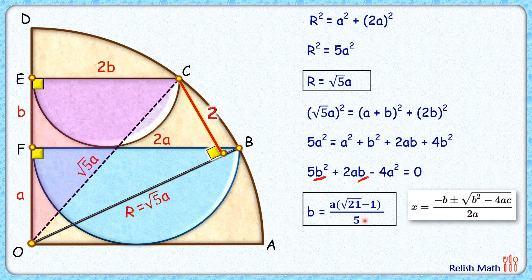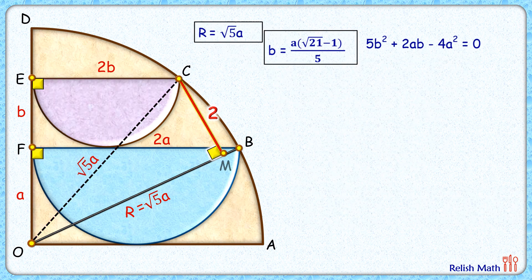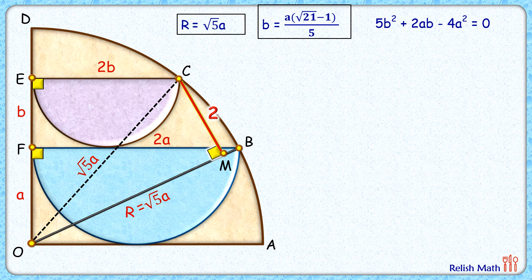For our next step let's save three values: r = √5·a, the value of b = a·(√21−1)/5, and the quadratic relation. Now let's consider right angle triangle OMC. We have the perpendicular length of 2 cm, and OC is the radius we need to find. If we can determine the angle theta, we can apply sin θ = perpendicular / hypotenuse to get the radius.